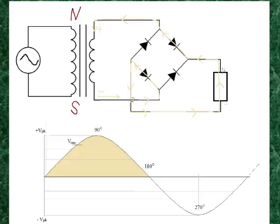So the electrons are forced to go through the component's negative terminal, power the component, then leave the component. They could go one way, but they can't go back at themselves — they're not interested in going back to where they came from. They're interested in going to the positive, so they go through this diode and back around.